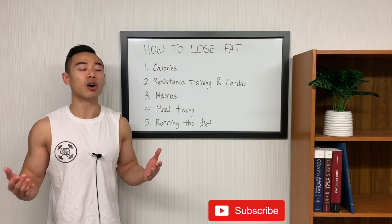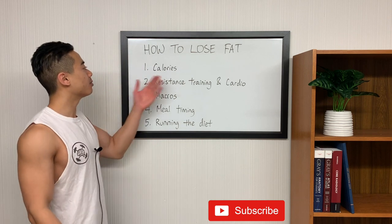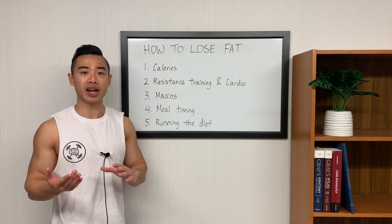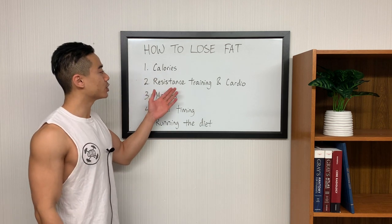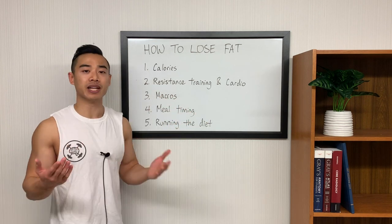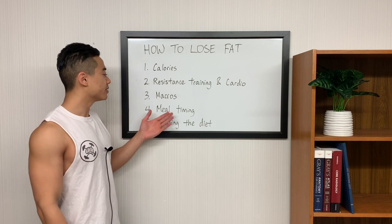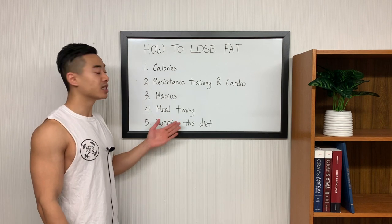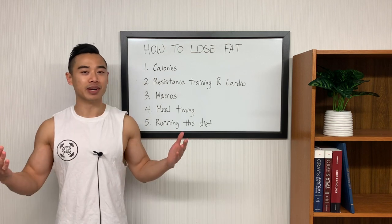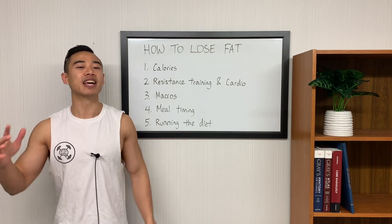Quick outline for today: we'll be talking about all the basic requisites for losing fat. We'll start off by talking about calories, how to figure out your calorie deficit, and then how to create it. We'll talk about resistance training and cardio. We'll talk about macros and I'll explain how much you need of each macro and how to set them up step by step. We'll briefly touch on meal timing, and lastly, we'll talk a little bit about how to run the diet over time. If you've been enjoying my content, make sure you smash that like button, hit subscribe, and let's get into it.